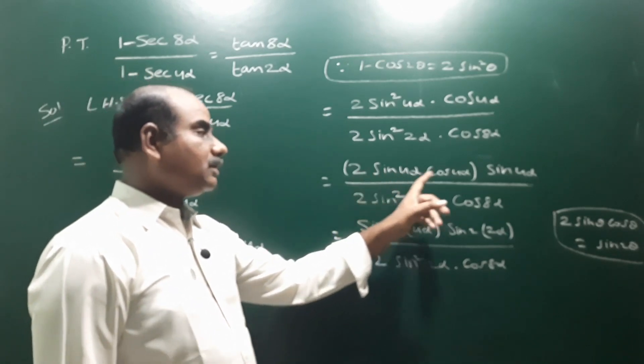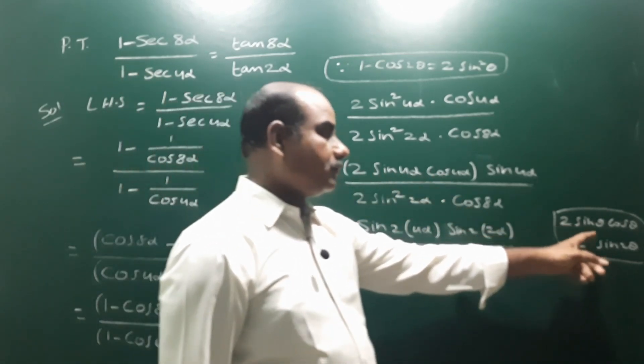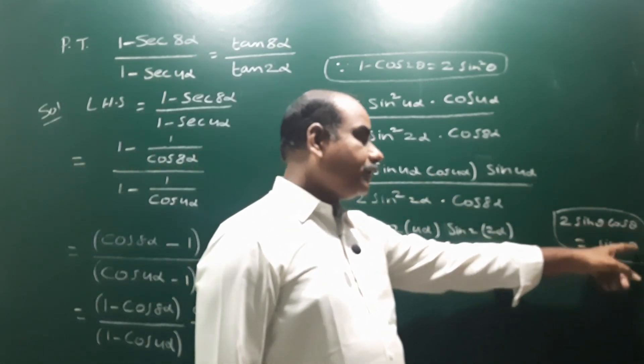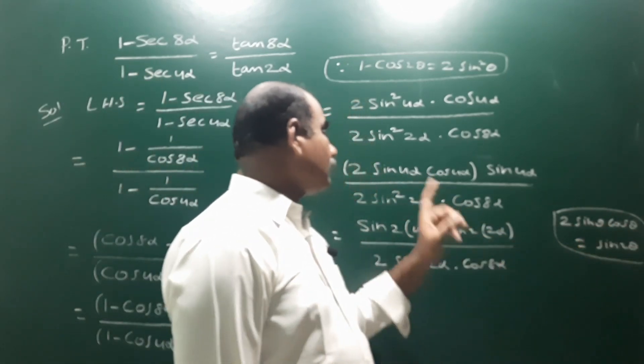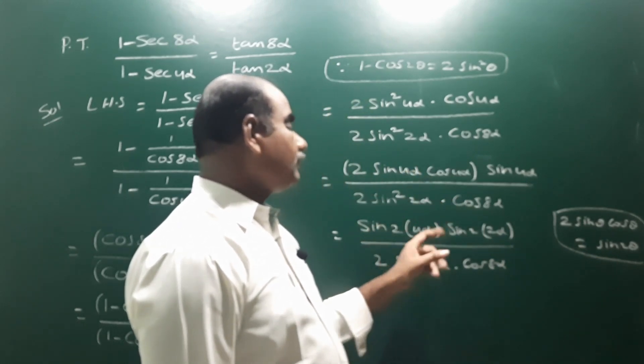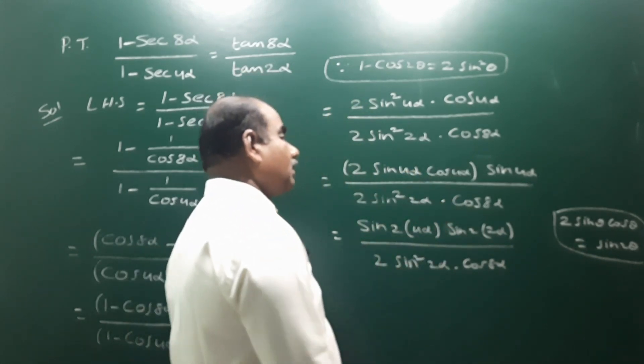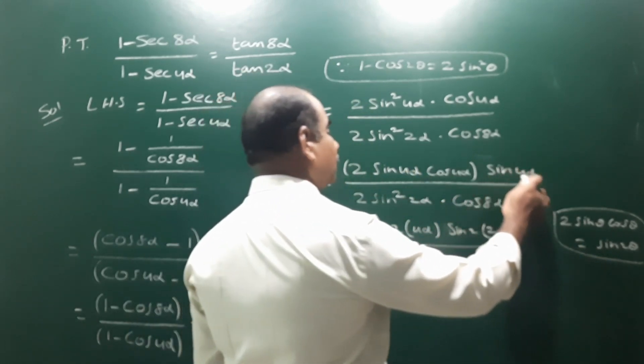Applying the formula 2sin4α · cos4α = sin2×4α = sin8α. So the numerator gives sin8α, and the denominator carries cos8α.